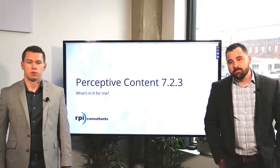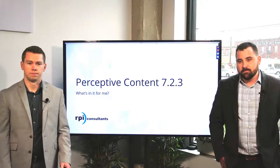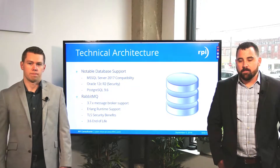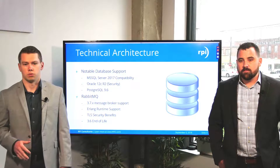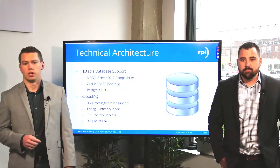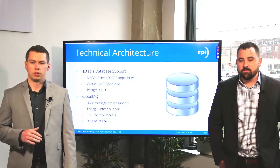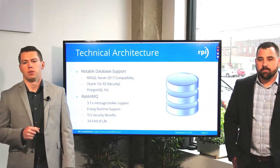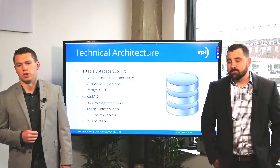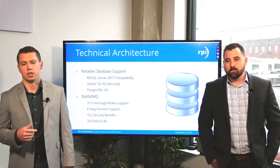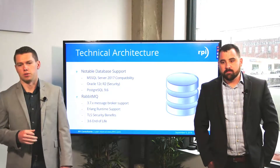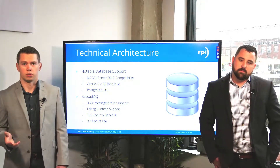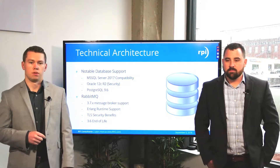First we're going to cover the Perceptive Content 7.2.3 updates. Most notably, we'll start with the technical architecture, looking at database support. The updates include Microsoft SQL Server 2017 compatibility, Oracle 12 CR2 — that way you can take advantage of new security enhancements — and Postgres. Another architecture update would be for RabbitMQ, which allows for a higher level of security enhancements surrounding TLS with Java. Pivotal, the maker of RabbitMQ, has announced that version 3.6 will be nearing its end-of-life cycle, so it's great that we're now including 3.7 message broker support.